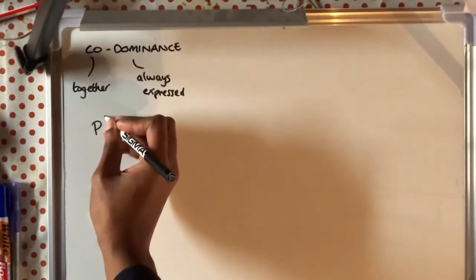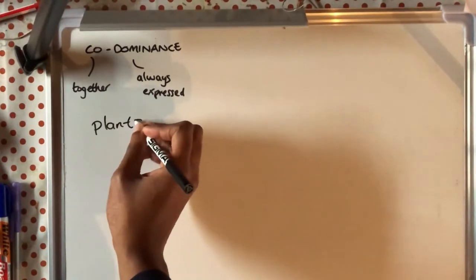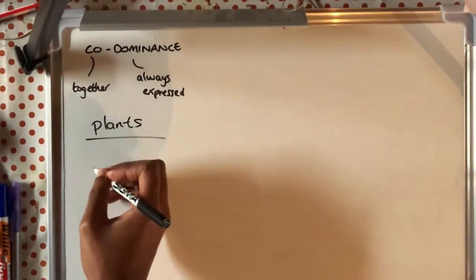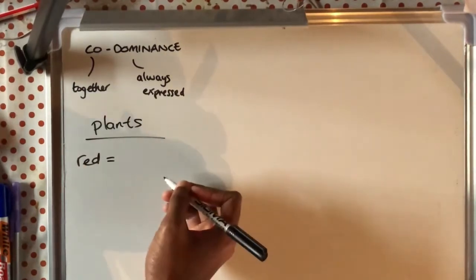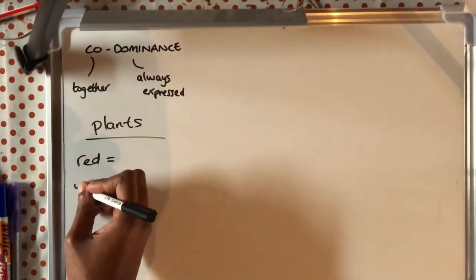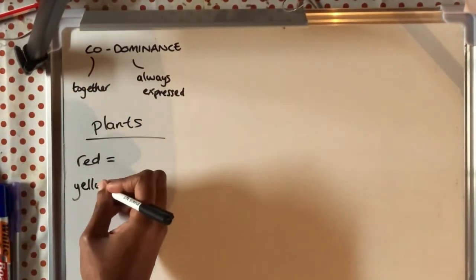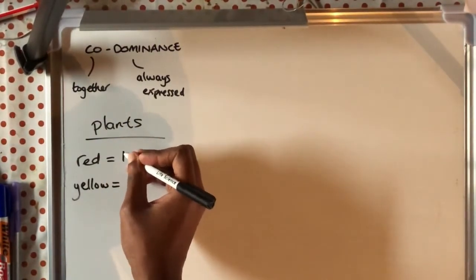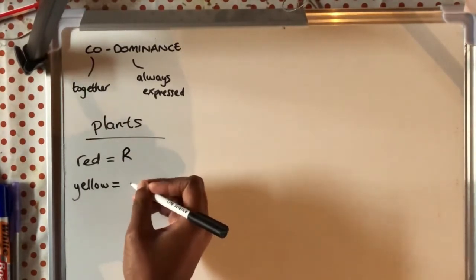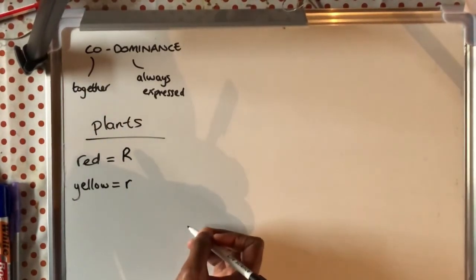If we take an example of plants and the petals of plants and we say that there's some red petals which would be dominant and we can have some yellow petals which would be recessive. So how could we denote that? We do like our normal inheritance which we looked at last lesson. We've got a capital R for red and we've got a lowercase r for yellow.